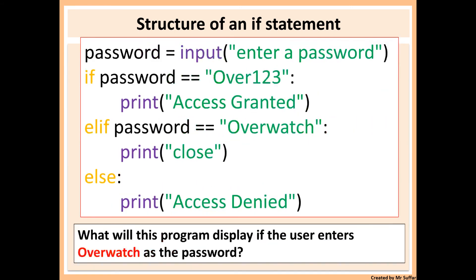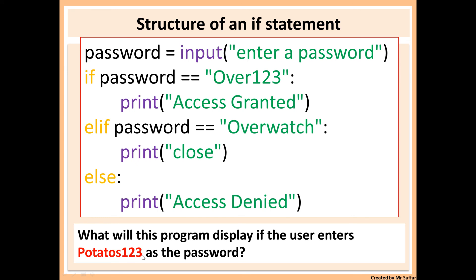Here we have another example with a password. It says password equals input 'enter password'. If the user types 'overwatch', the program will display 'close', because the elif says if the password is 'overwatch' then display 'close'. It goes from the top one line at a time — if the password is 'over123' it would display 'access granted'. If it was 'potatoes123' it would go to the else statement and display 'access denied', because 'potatoes123' is neither 'over123' nor 'overwatch123'.